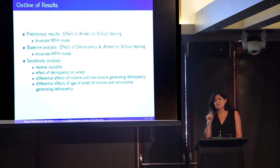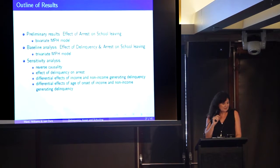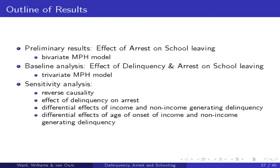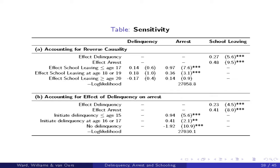So we know that both delinquency and arrest affect school leaving. Now I want to dig deeper: what about if we account for reverse causality? What about if we account for the fact that delinquency should have a causal effect on arrest? And what about if we look at different kinds of crime and different ages of initiation?